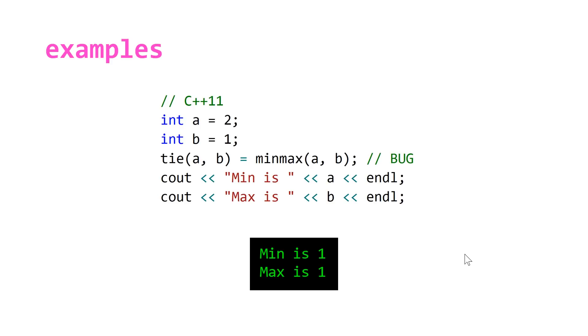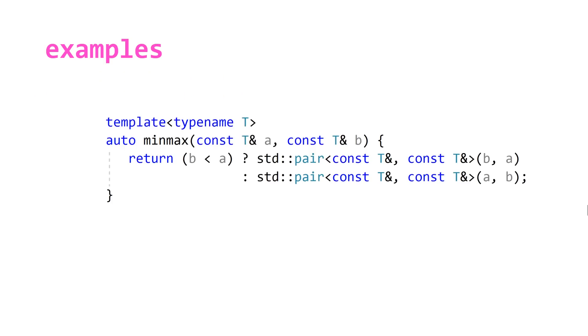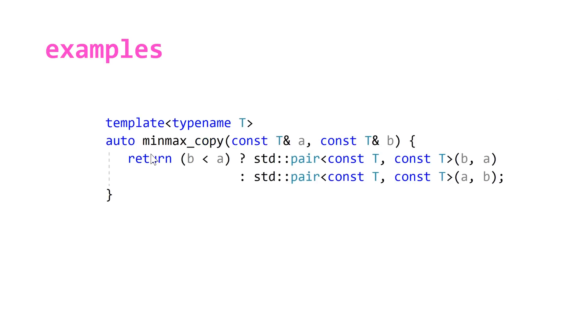So the way to fix this is to write our own sort of version of this minmax function. If we take a look at the implementation that you might find in one of the gcc or clang libraries, you can see this is what it would look like. If we just change this minmax to a minmax_copy and get rid of the references that were in our pairs that we return, we can then use this and get the behavior that we expect.